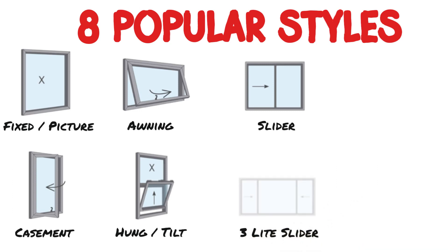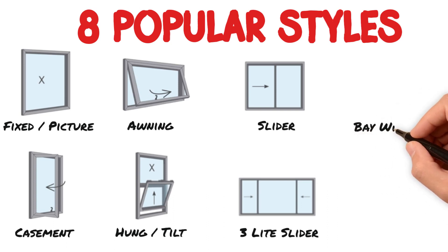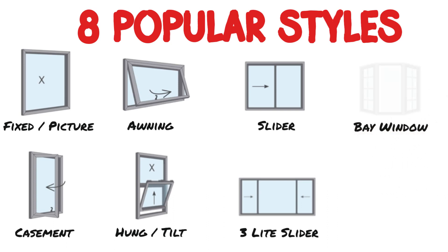A three-light slider is a three-piece version of a sliding window. This can come like the picture here, which is referred to as a quarter-half-quarter, or they can come as three equal pieces. A bay window extends out from the interior, and the windows on the ends, called flankers, are typically at a 30 to 45 degree angle.